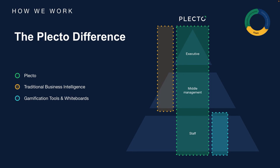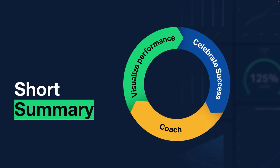Lastly, I want to inform you of how Plecto differentiates itself from its competitors. Traditional business tools often cater to executives and middle management, and gamification tools only motivate employees but lack the inclusion of leaders. Plecto covers all the layers across the company, which allows the company to work far more agile and effectively. So to summarize, Plecto visualizes performance on dashboards and reports, we celebrate great success with gamification, and we make sure that managers have the right tools to coach their teams in the best possible way.